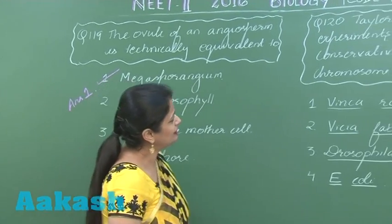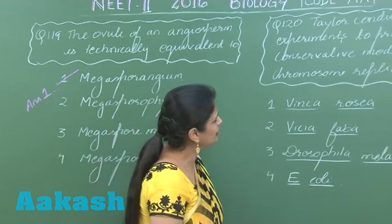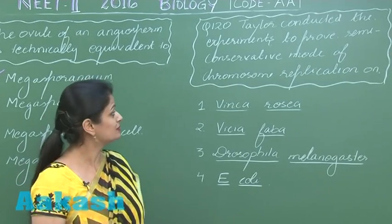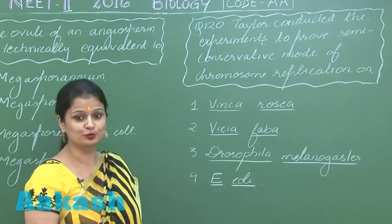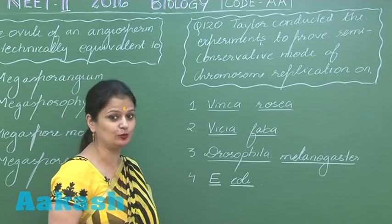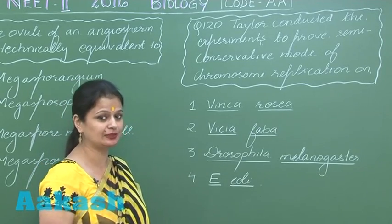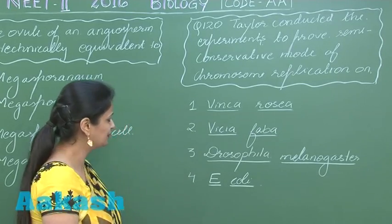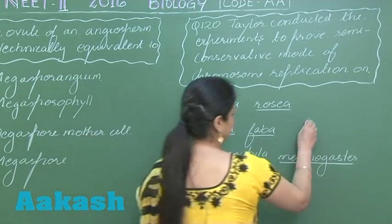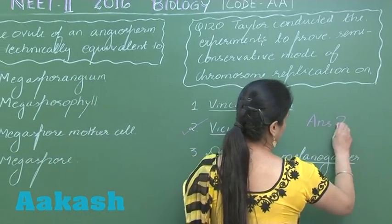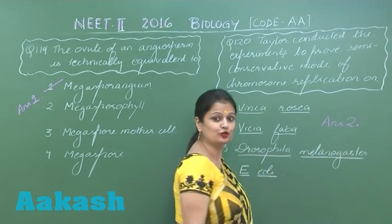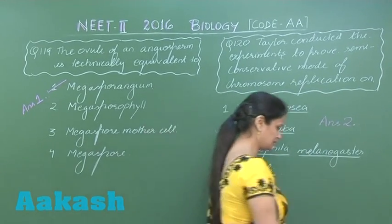Question number 120: Taylor conducted an experiment to prove the semi-conservative model of chromosome replication, and the experimental material selected by him was Vicia faba.